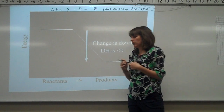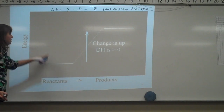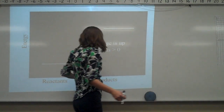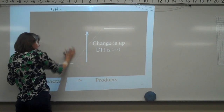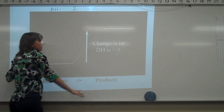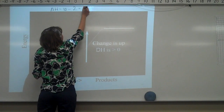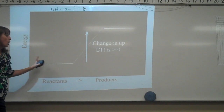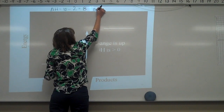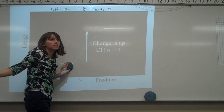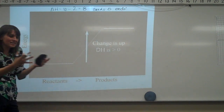Exo comes out, endo comes in. The next chart shows the same idea in reverse: the reactants are lower in energy than the products. If reactants are 2 and products are 10, that gives you delta H equals positive 8. This requires energy to go in, so it's endothermic — energy is being absorbed.